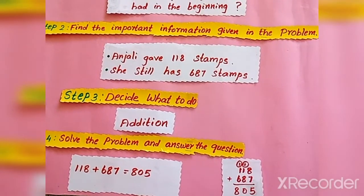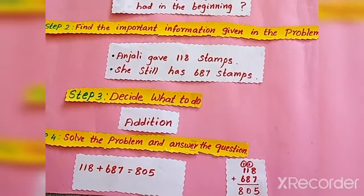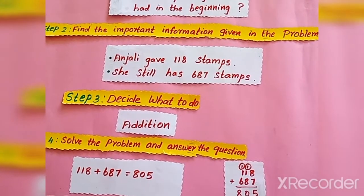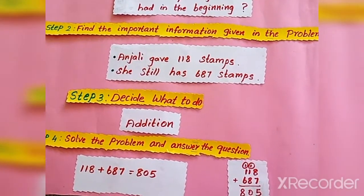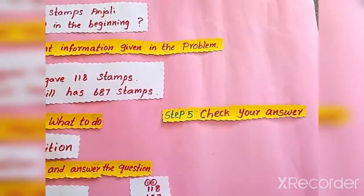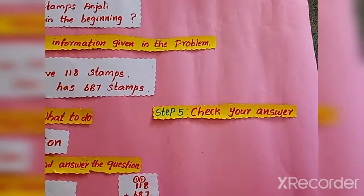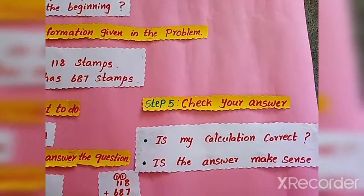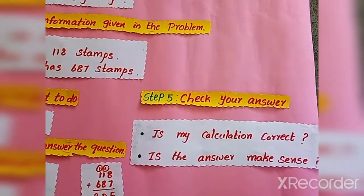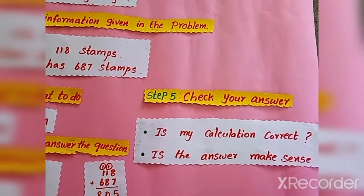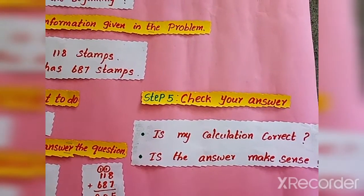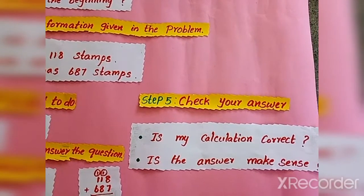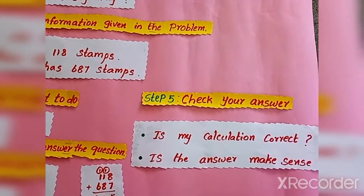This is the fourth step and our solution is done. Now the last step is to check the answer — we have to check whether our answer is correct or wrong. To check the answer, verify whether your calculation is correct, whether it should be subtraction or addition, and also check whether you got a sensible answer. These are the five steps in solving a problem.